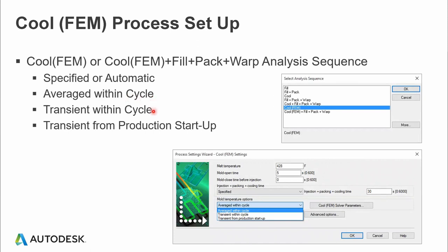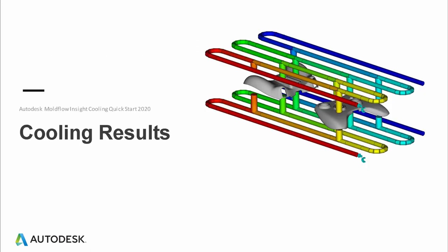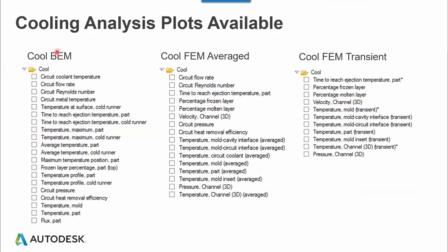Let's quickly look at the cooling results. Depending on what type of analysis you are running — Cool BEM, Cool FEM, or Cool FEM Transient — you'll get different types of results. Cool FEM particularly has a longer list of results because it gives results on both the core and cavity side, which we call part top and part bottom. It also shows the temperature profile through the thickness, whereas Cool FEM Average is very similar to Cool BEM but averaged within the cycle, and Cool FEM Transient shows results throughout the entire cycle.